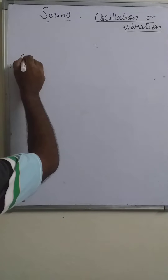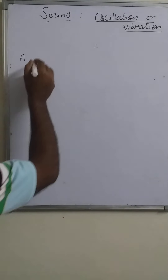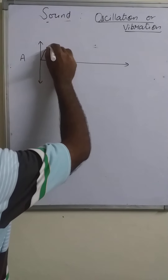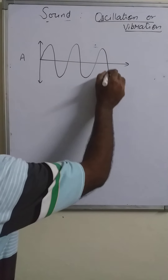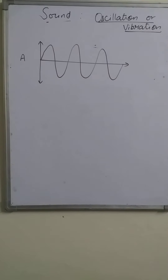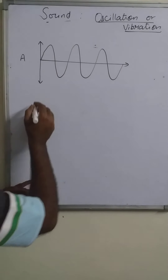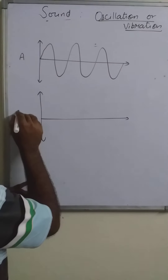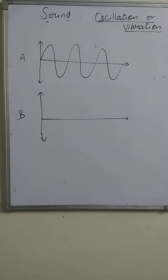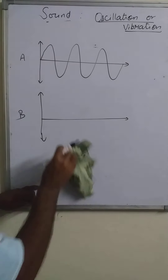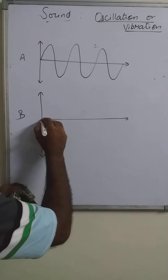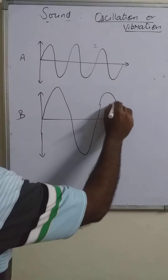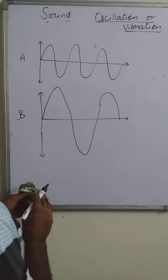Suppose we take object A as a sound source — it produces a wave pattern formed like this. Then another object B produces sound and its wave pattern looks like this. Comparing the two, both patterns are different in amplitude and oscillation count.